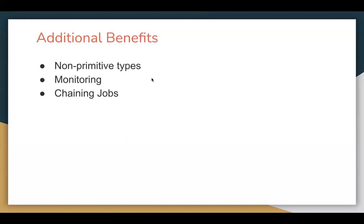Now let's talk about the additional benefits available with Queueable Apex. The first is non-primitive types. In the case of future methods, you are restricted to primitive data types or primitive arguments — maybe a collection of primitives, but primitives only. In Queueable Apex, you can go beyond primitive data types and use non-primitive types as arguments, which means you can work with sObjects as well.